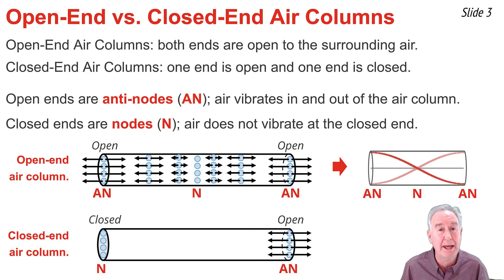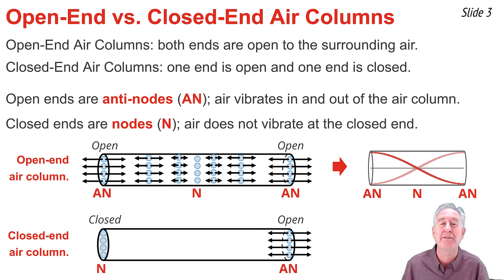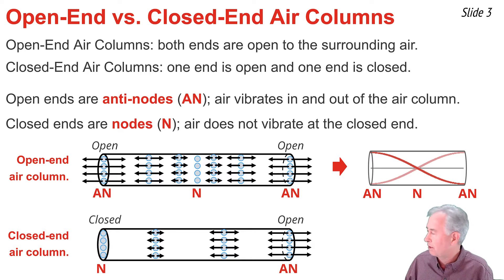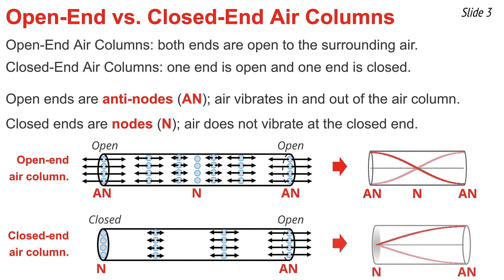For a closed-end air column, at the closed end, air cannot vibrate at all, so we would see a node at that location. But at the open end of a closed-end air column, air has a maximum positive to negative to positive displacement as it vibrates into and out of the air column. In between the closed end and the open end, we would observe particle vibration, just not as much. As you approach the closed end there is less and less vibration, and as you approach the open end there is more and more vibration. We can translate this vibrational pattern into a standing wave pattern by plotting the displacement of the air particles as a function of their location within the air column. At the open end we display an anti-node, but at the closed end a node is formed since air is not free to vibrate or be displaced at that location.